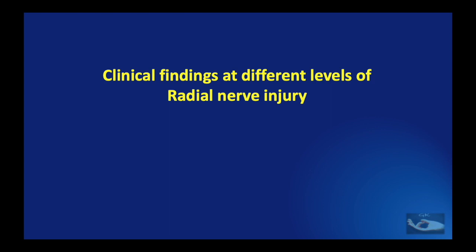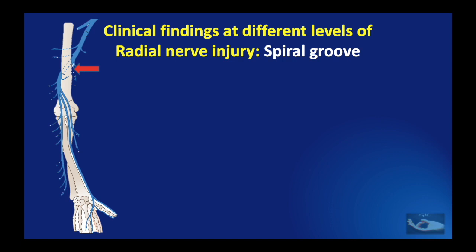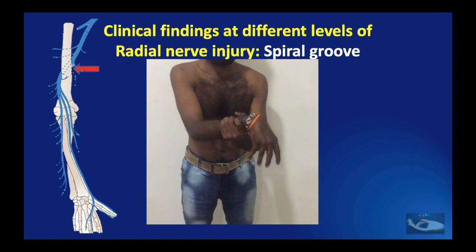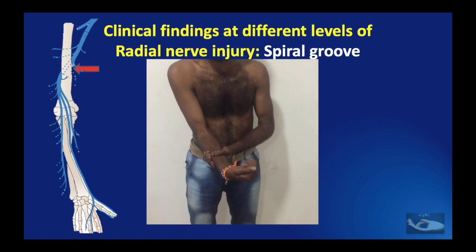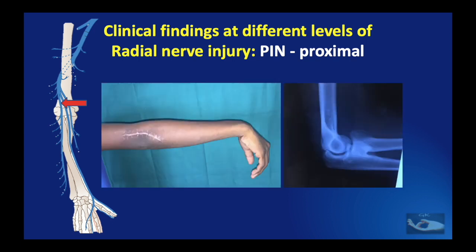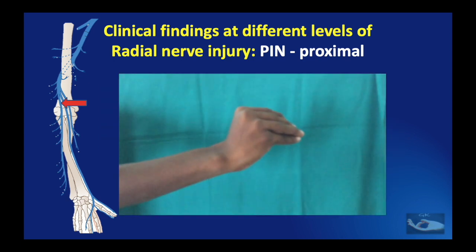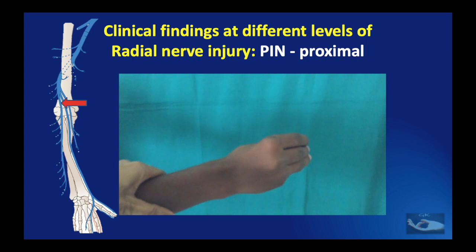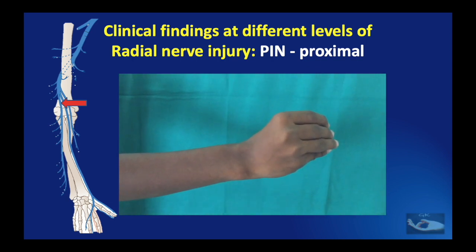Having learned about the clinical examination of the radial nerve, we shall now see clinical findings at different levels of radial nerve injury. In a patient who sustained a fracture of the mid-shaft of humerus with plate and screw fixation through the posterior approach, radial nerve palsy represents an injury at the level of the spiral groove, resulting in total palsy of the wrist extensors, thumb extensors and finger extensors. When the injury is to the proximal posterior interosseous nerve — as in a patient with dislocation of the radial head — extension of the wrist is preserved because branches to the extensor carpi radialis longus and brevis are given off before the posterior interosseous nerve forms, but there is loss of extension of the fingers and thumb.